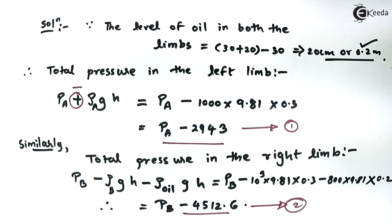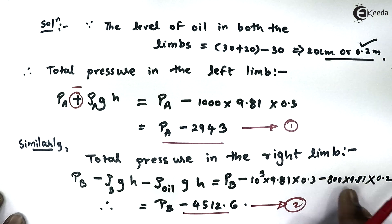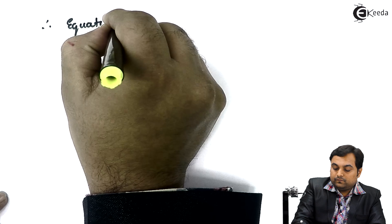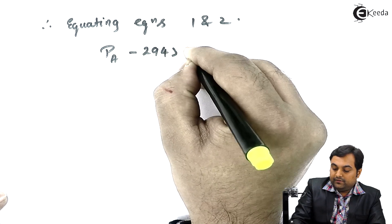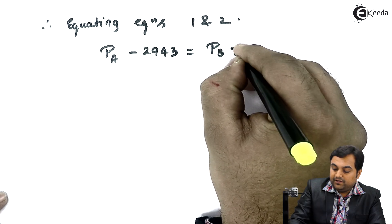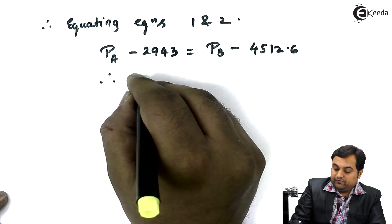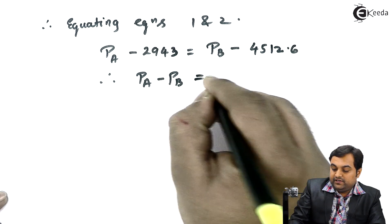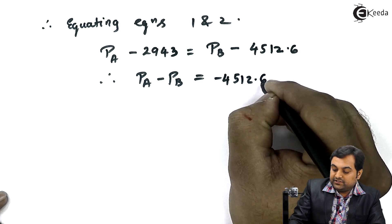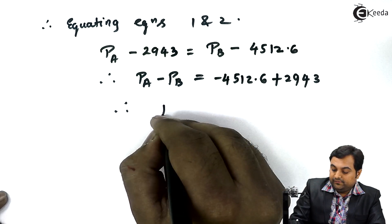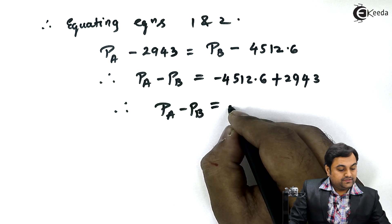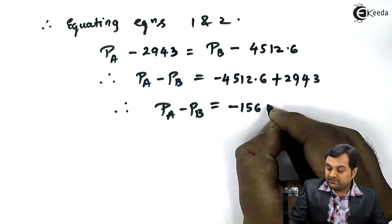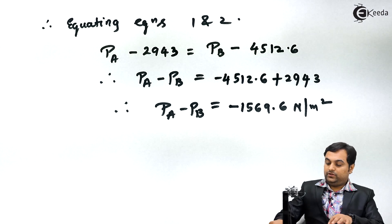To find the difference in pressure, we equate Equations 1 and 2. From Equation 1: P_a − 2943. From Equation 2: P_b − 4512.6. Setting them equal and rearranging, P_a − P_b = −4512.6 + 2943 = −1569.6 Newton per meter square.